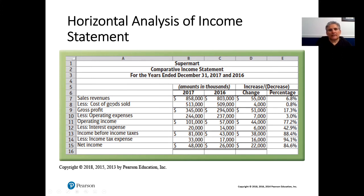Here's the line item sales revenue — the change in dollar amount and the percentage increase. We can line up the entire income statement and do the same thing for every line item horizontally. For example, the net change for cost of goods sold between 2017 and 2016 is $4,000 positive — it's up — which computes to 0.8%. We do that by taking the $4,000 and dividing it by $509,000. Follow the same pattern all the way down.